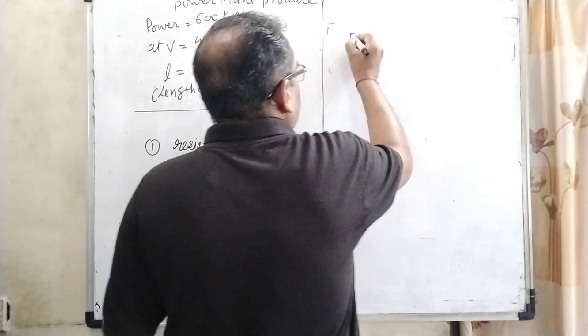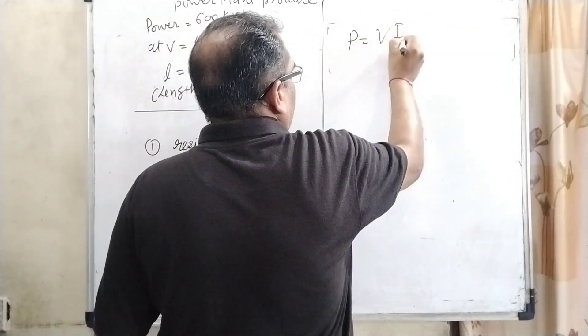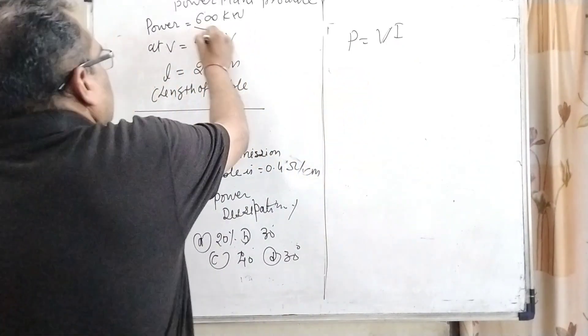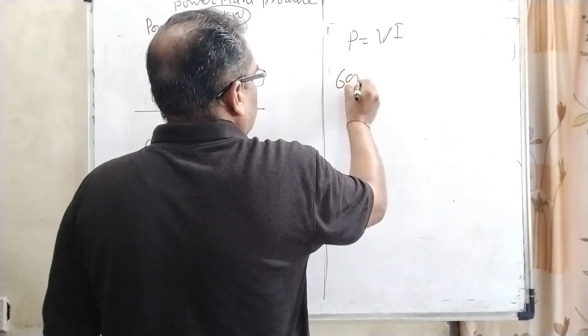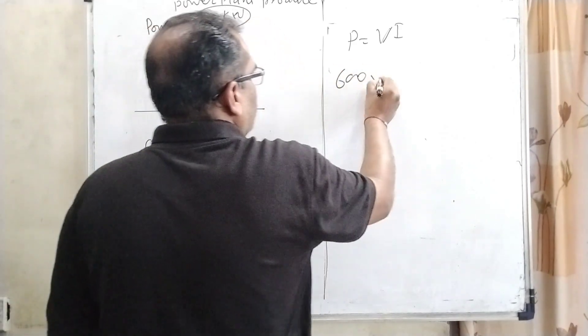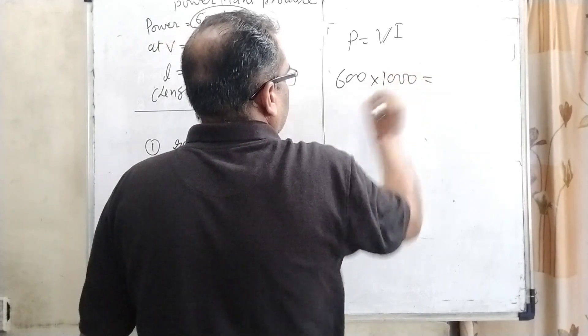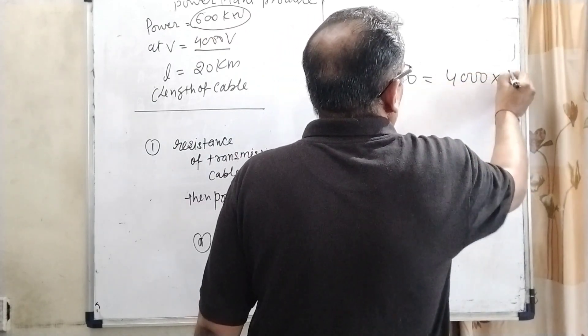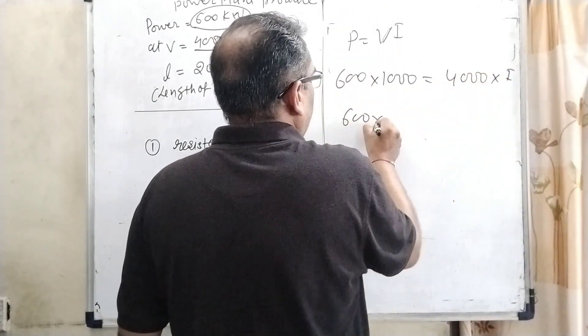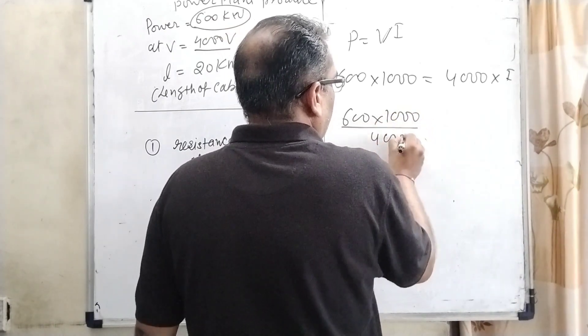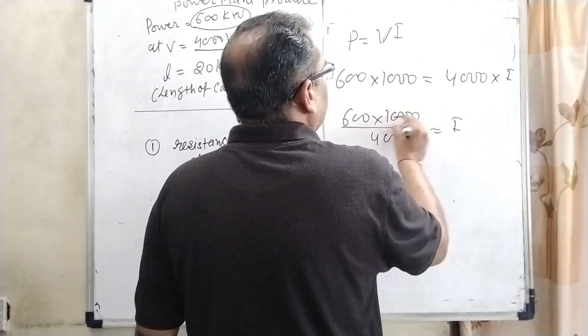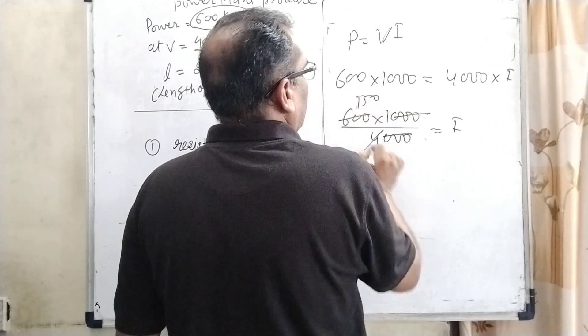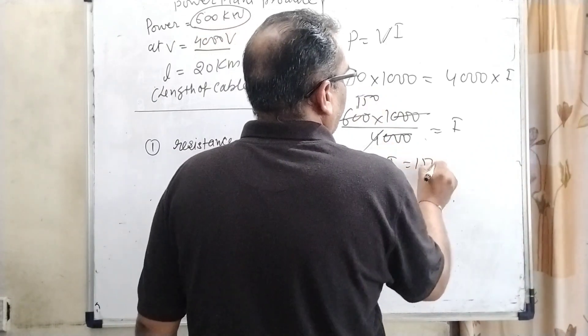First case we have given the direct transmission. In that case, power equal to V into I. Here V is potential and I is current. Here power is given 600 kilowatt means 600 into 1000. And potential is given 4000 volt, then 600,000 divided by 4000 that is 150. Here I equal to 150 ampere.